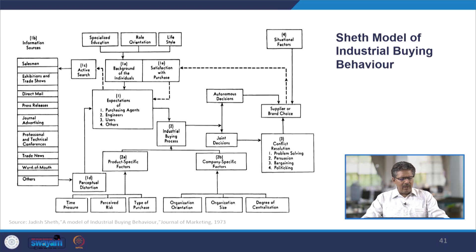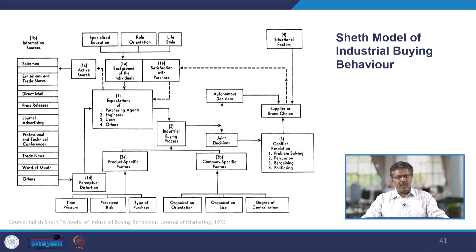Today we are going to talk about Seth's model of industrial buying behavior, in which he explains the various expectations of purchasing agents or people involved in the purchase process — for example, the purchasing manager or procurement manager, finance manager, quality control engineers, and people from the manufacturing department who are the users. What is their expectation, what is the buying process, how do they choose their brand and supplier, and is it an autonomous or a joint decision? All these topics we will discuss today.